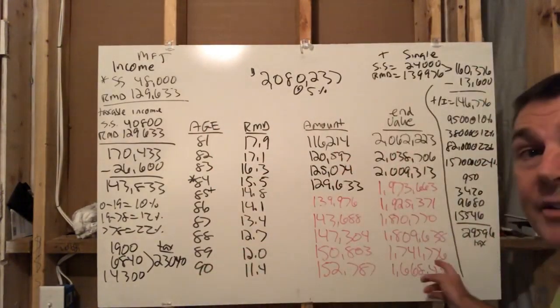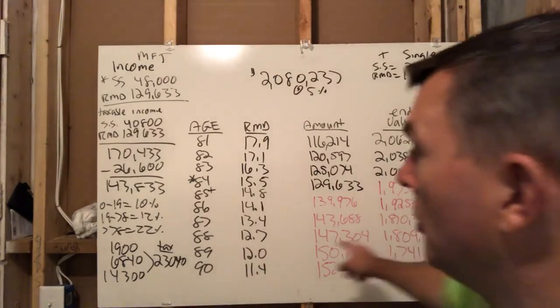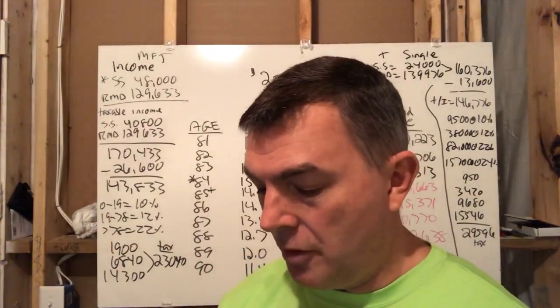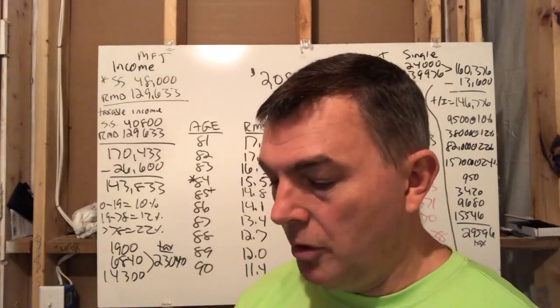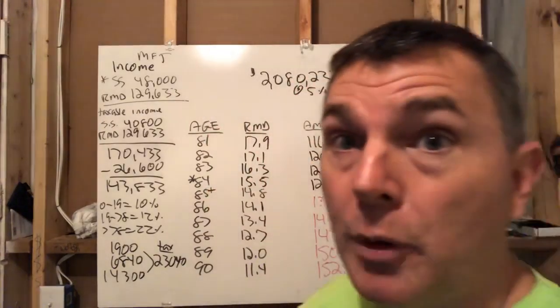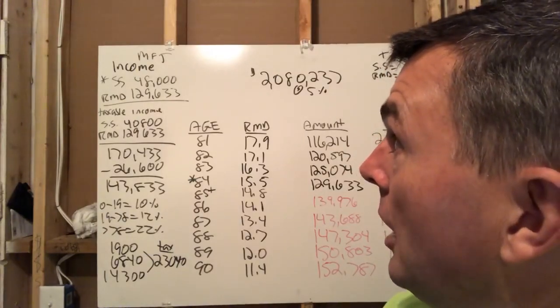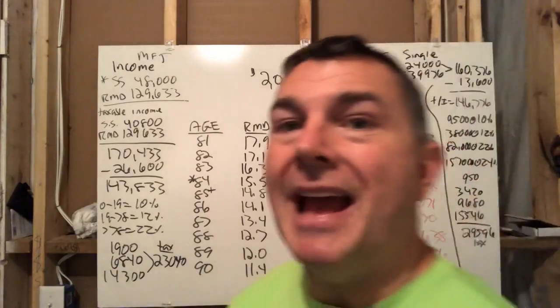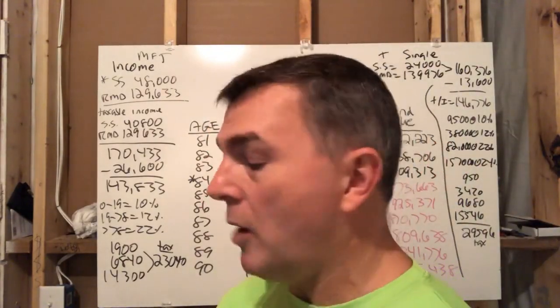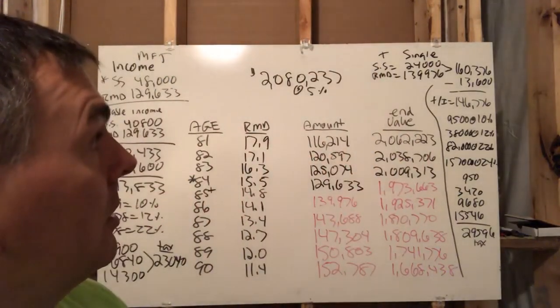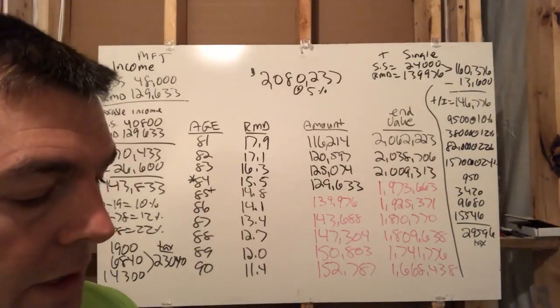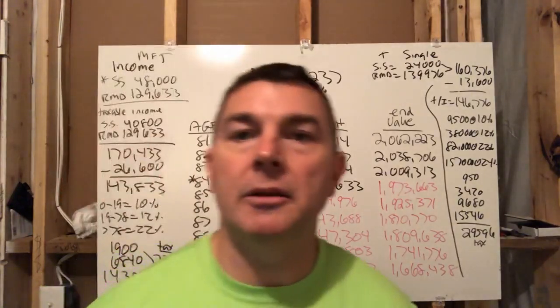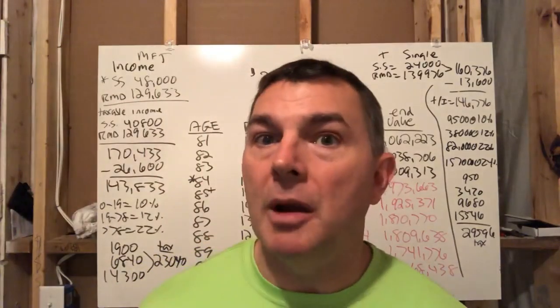So when you factor all these, you have a tax for her of 29,596, which is 6,500 more than what it was when she was married filing jointly. So 6,500 divided by 23,040 is a 28% increase in taxes, even though her income went down by 24,000 bucks. She had 177,000 between her and Bob of income with social security and required distributions. And now she has 14,000 less. So she has about 10% less income, even though she has 28% more taxes, but it doesn't end there, my friends.